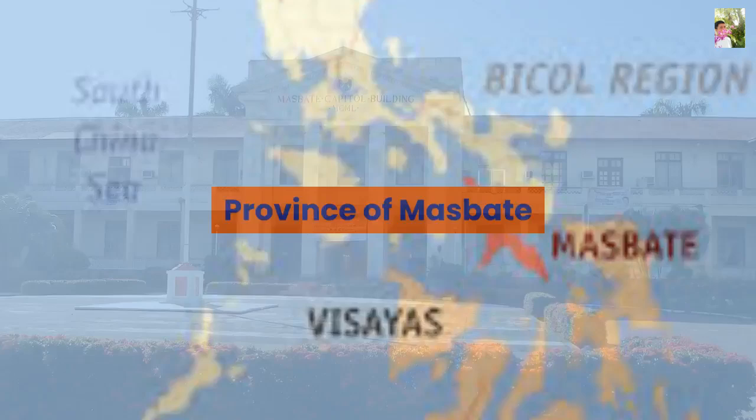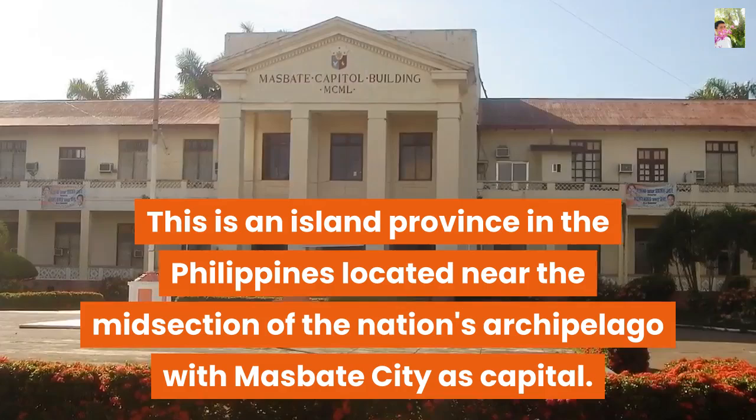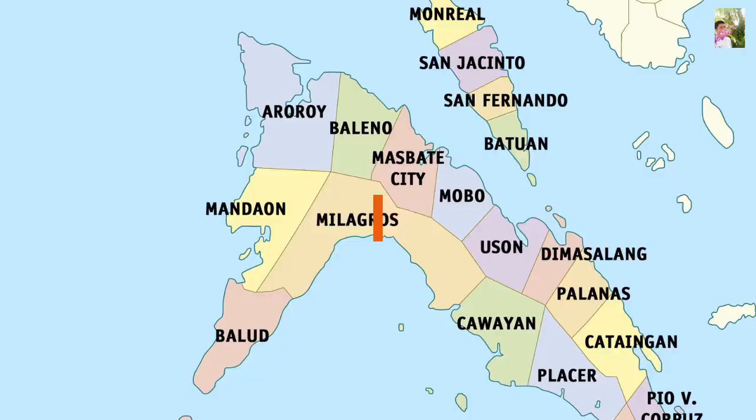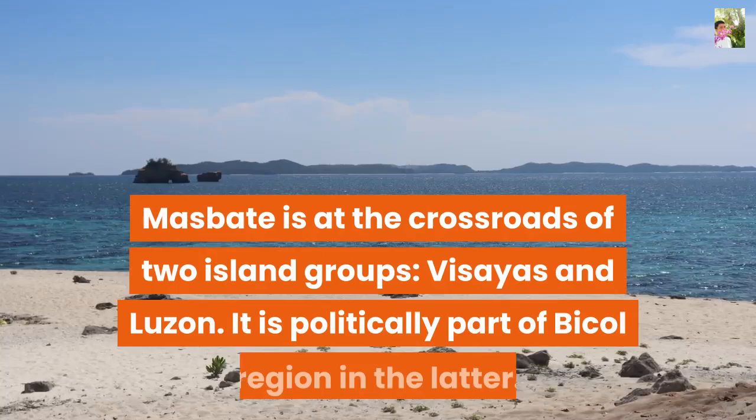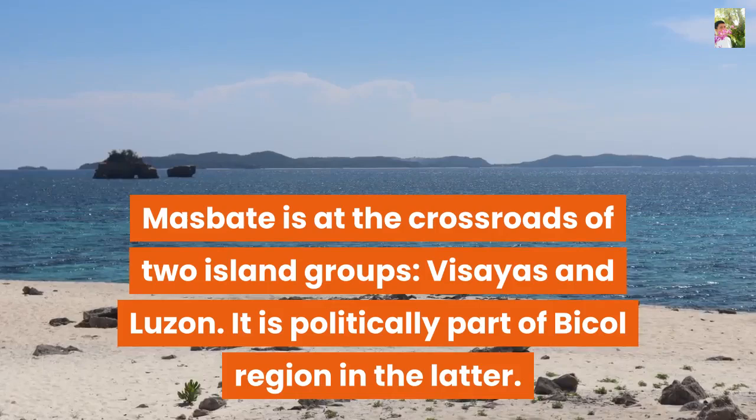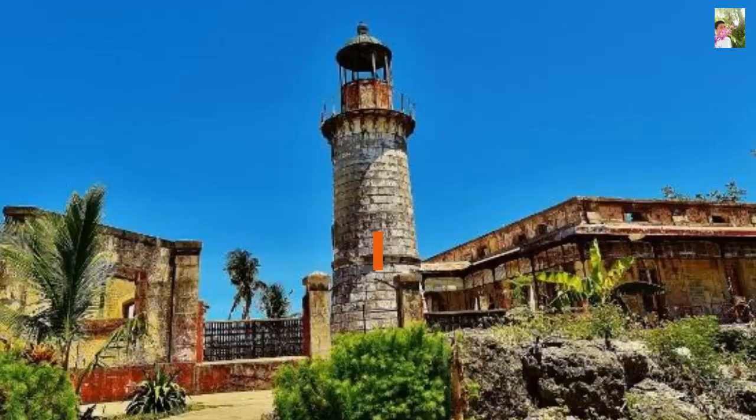Province of Masbate: This is an island province in the Philippines located near the midsection of the nation's archipelago, with Masbate City as capital. The province consists of three major islands — Masbate, Ticao, and Burias — comprising 20 municipalities and one city. Masbate is at the crossroads of two island groups: Visayas and Luzon. It is politically part of Bicol Region.